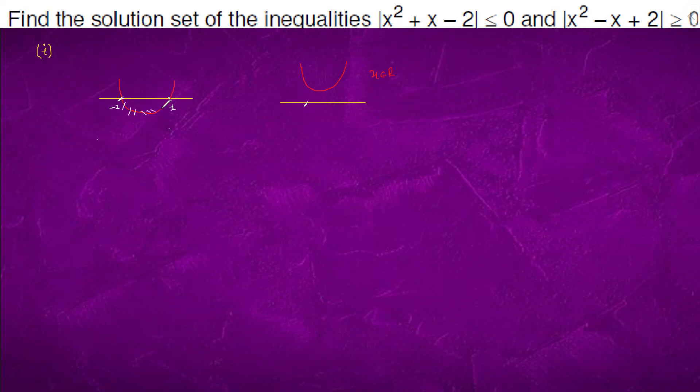And this is modulus, it will go like this. So, the point where it is 0 or less than 0, this is only two points, this and this. And this is x belongs to R.